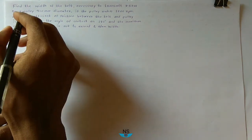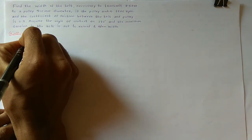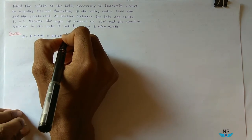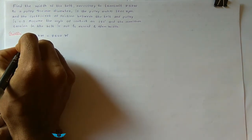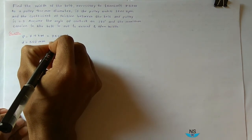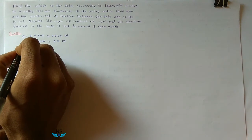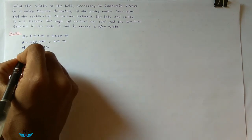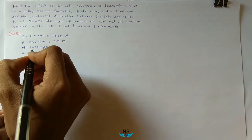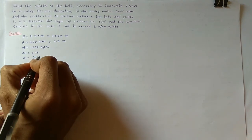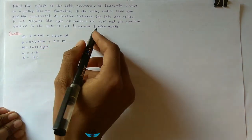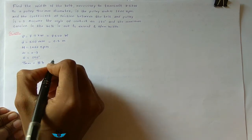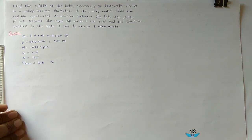Given: Power to transmit is 7.5 kW, that is equal to 7500 Watt. Pulley diameter is 300 mm, that is equal to 0.3 meter. Speed N is equal to 1600 rpm. Coefficient of friction mu is equal to 0.3. Angle of contact theta is equal to 180 degrees. Maximum tension Tmax is equal to 8B newton, where B is the width in mm.